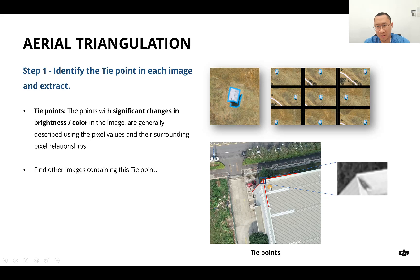In this picture, the edges of this corner of the building have significantly different colors with their surroundings, so we can see this corner as a tie point. We identify the tie points, extract them, and find other images also containing this tie point.